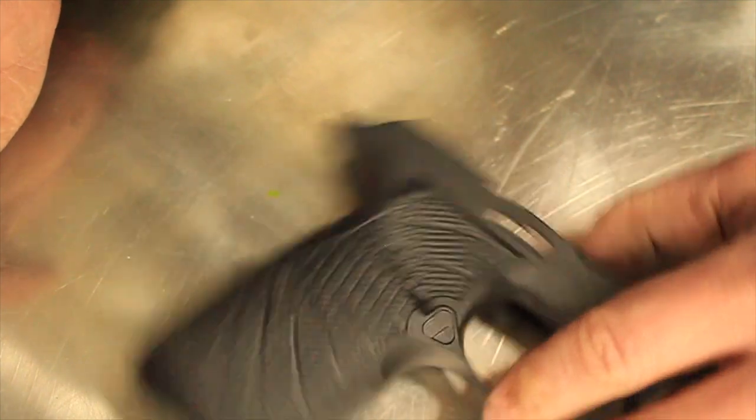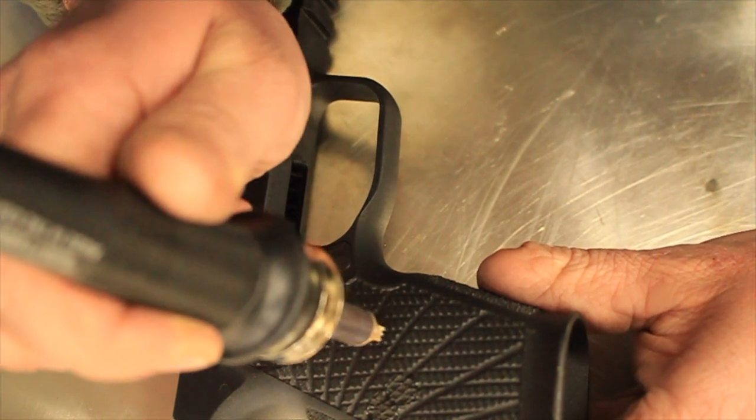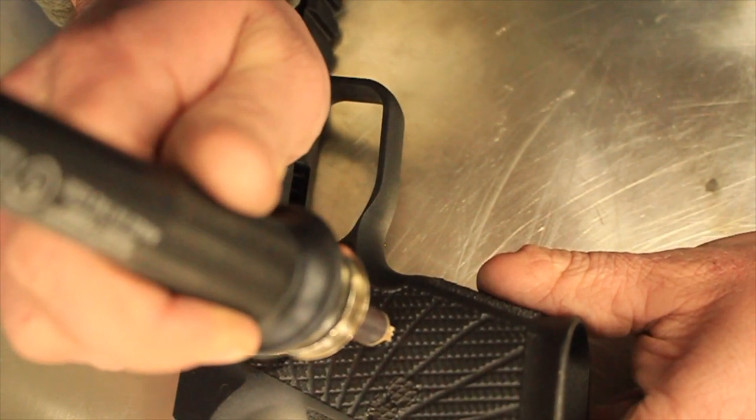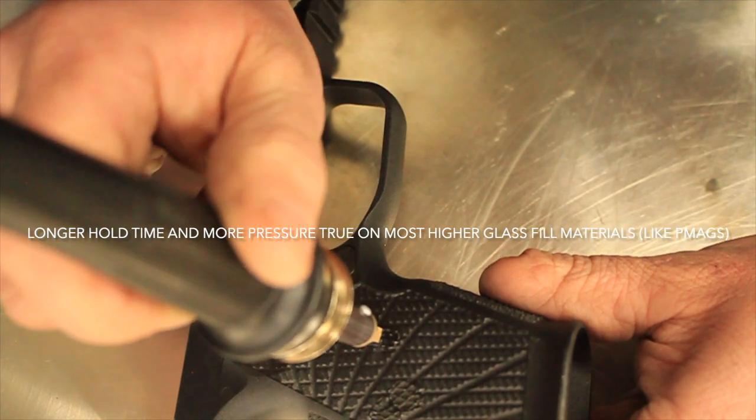So on a high glass fill frame, the basket weave is going to be held a little bit longer onto the material, and you're going to have to press a little deeper.